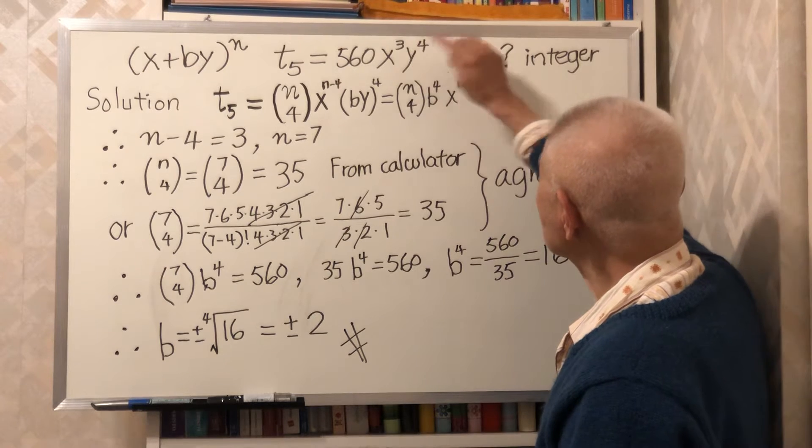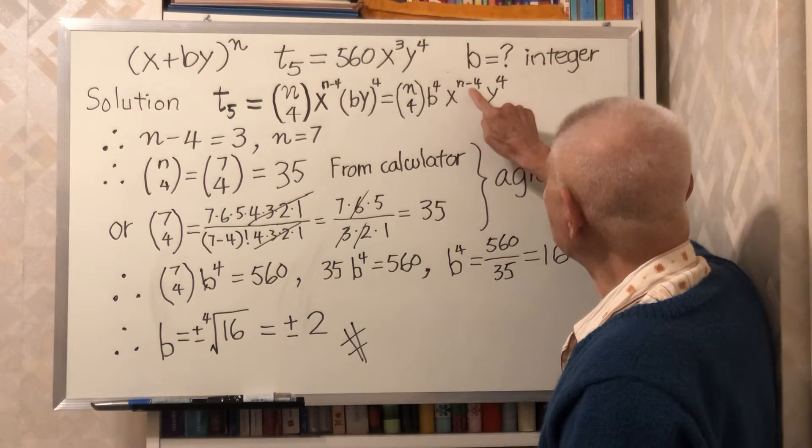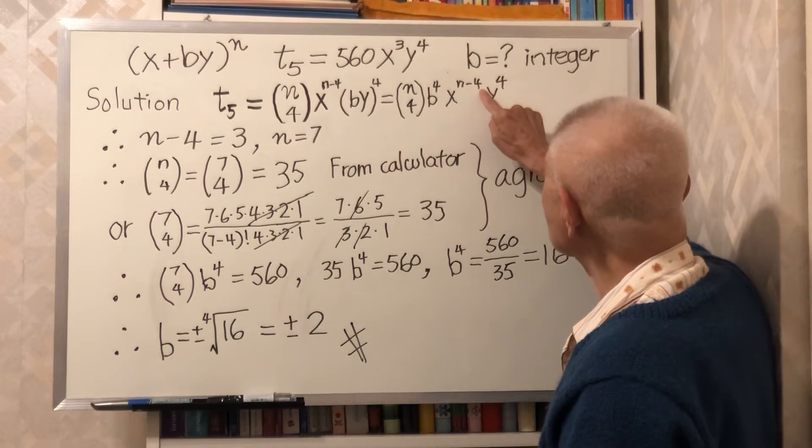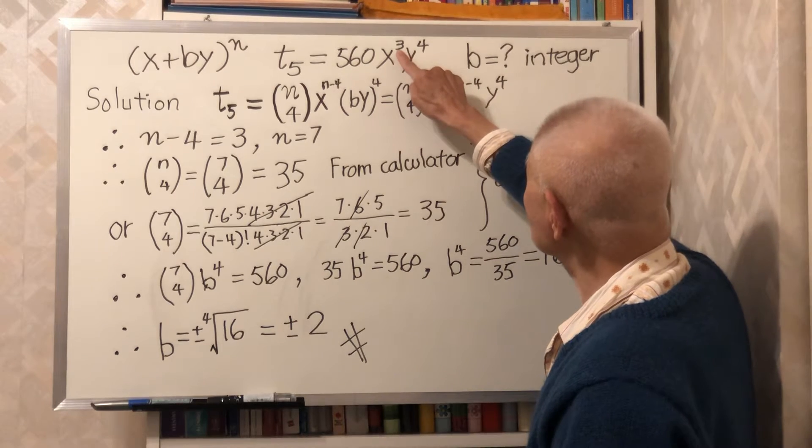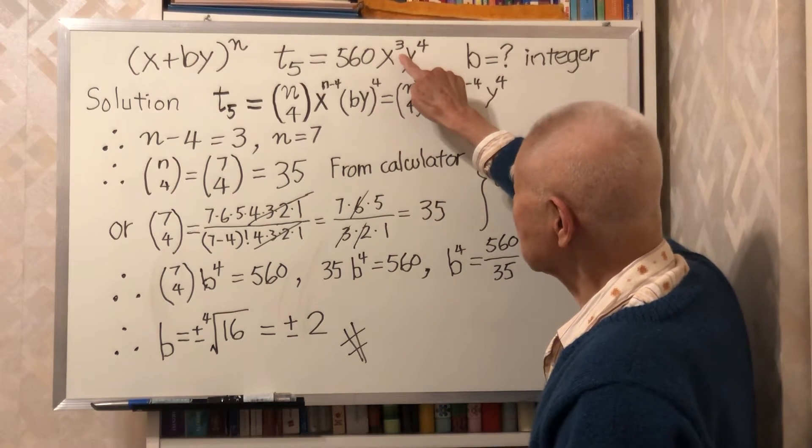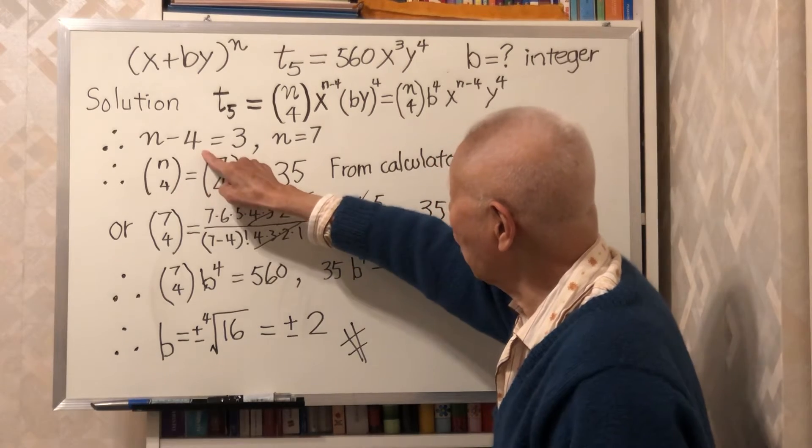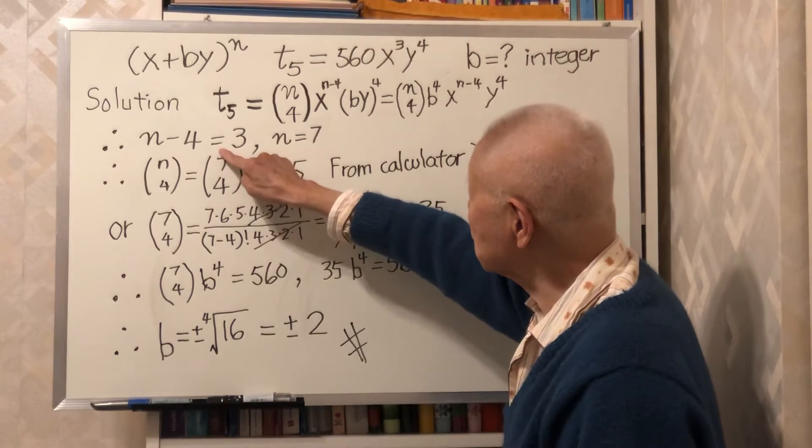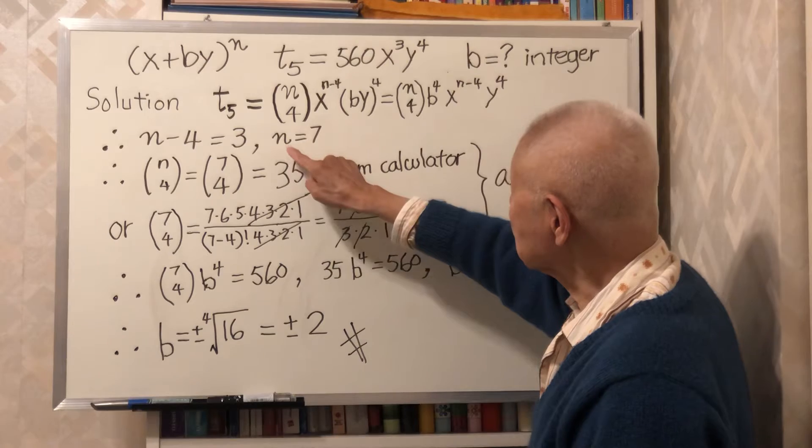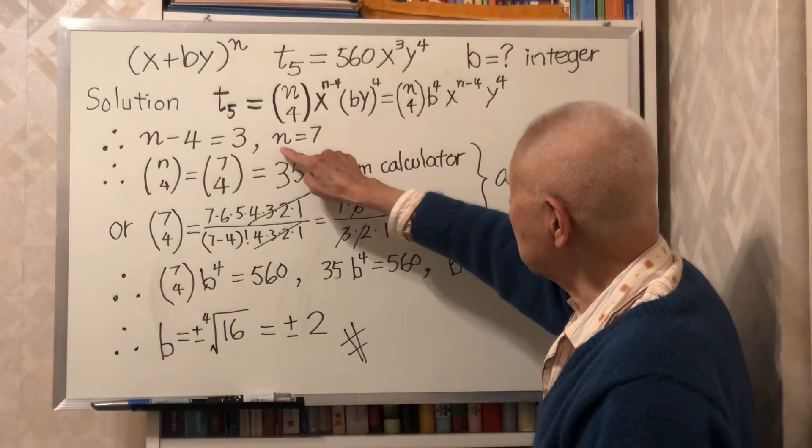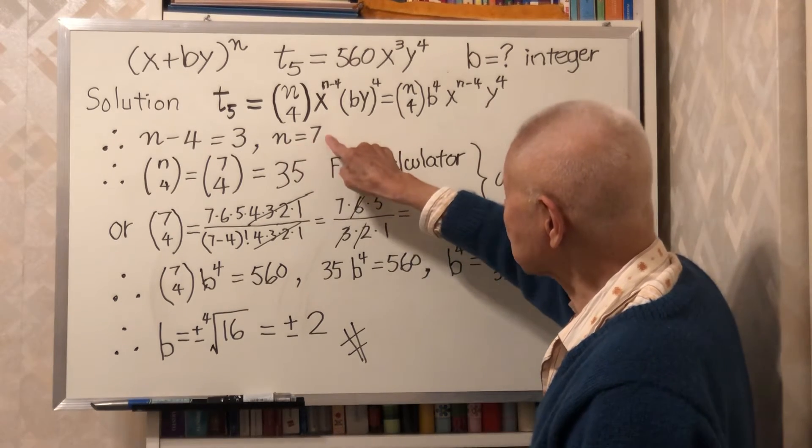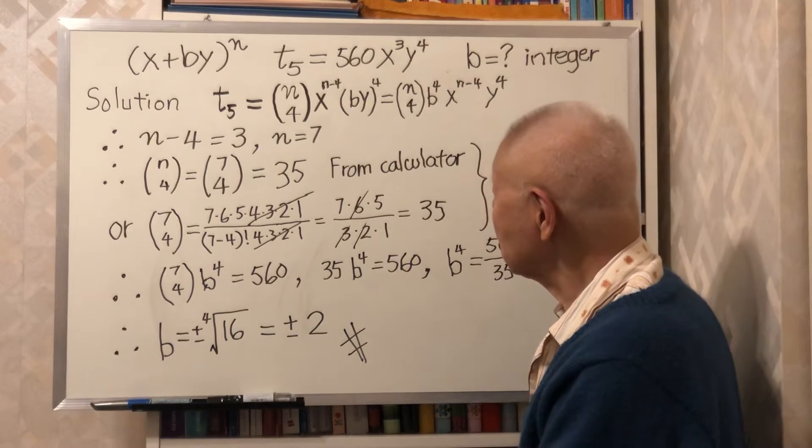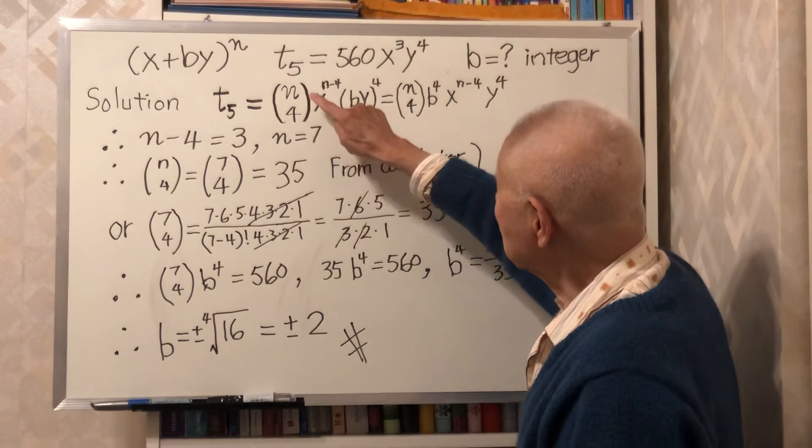Compare this fifth term with this. We notice n minus 4 must equal to 3. That means n is 7.